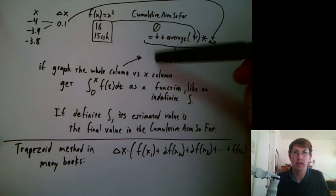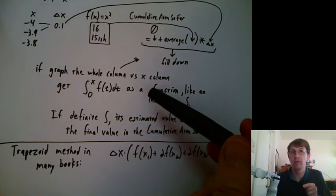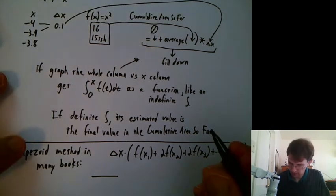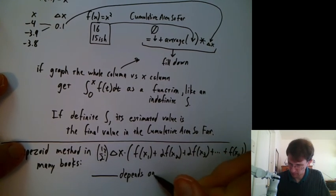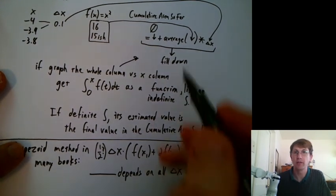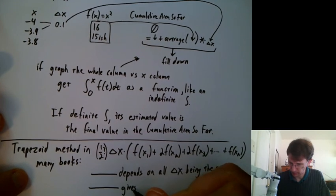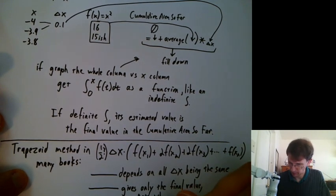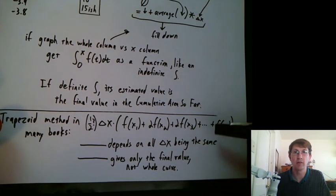So I like teaching this more general method here. This, in some sense, saves a little bit of computation because you're only doing the multiplication once. But this also just gives you one answer, the definite integral. It doesn't give you the cumulative area so far along the way. So it depends on all the delta x's being the same. And it only gives one answer rather than a whole curve. So it gives only the final value, not the whole curve. So it is in some sense a shortcut, but it's a shortcut that misses a whole lot. And I really don't encourage anyone in my class using that.